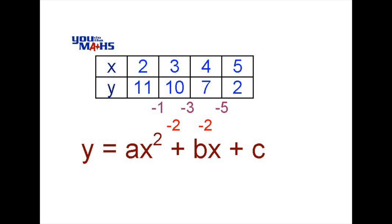So we have two options in this case. One option is we can extend our table to the left so that we actually include the x value of 0, and we'll have a look at that one first. Another option is that we can use the algebraic process, leaving the x value of 2 as the first value in our table. Let's have a look at the possibilities.